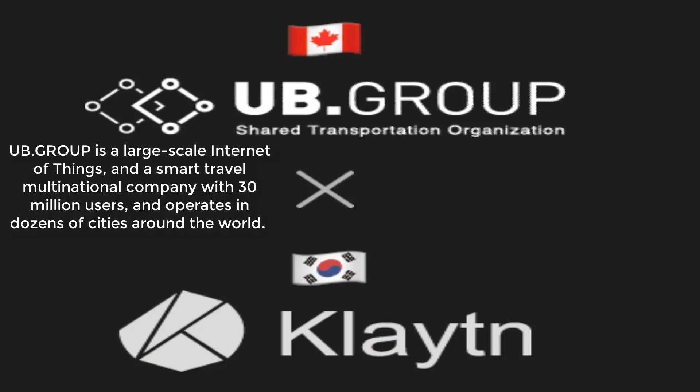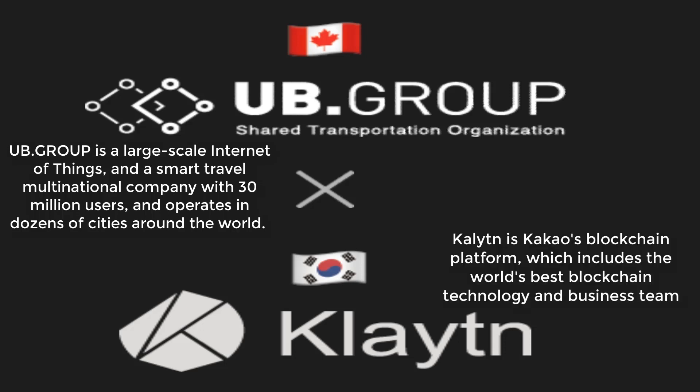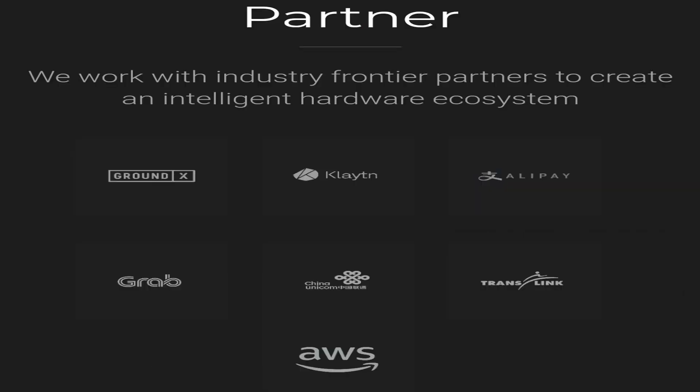UB Group is a large-scale internet multinational company with 30 million users around the world. Claything is Kakao's blockchain platform, which includes the world's best blockchain technology and business services. Kakao is a multimedia social messaging service with over 15 million followers.